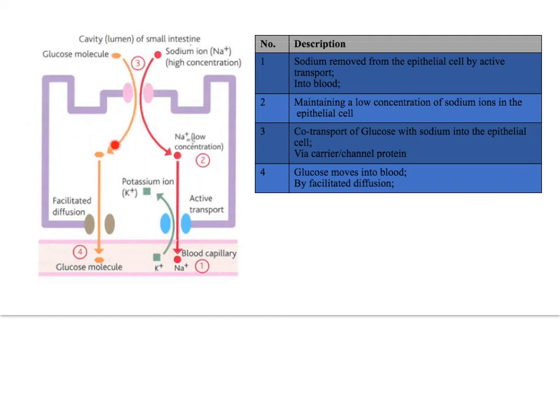Glucose is going against the concentration gradient without using ATP, because the sodium ion is carrying the glucose with it. Now we end up with a high concentration of glucose inside the epithelial cell. Glucose can move by facilitated diffusion into the blood through a channel protein.